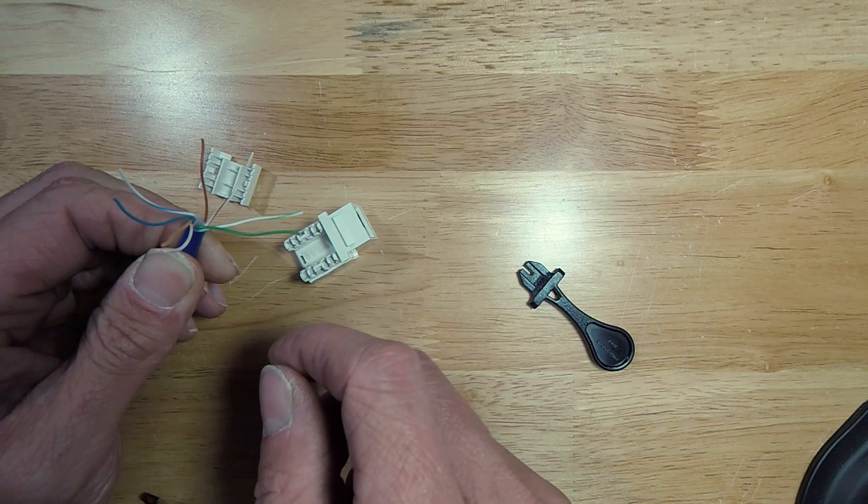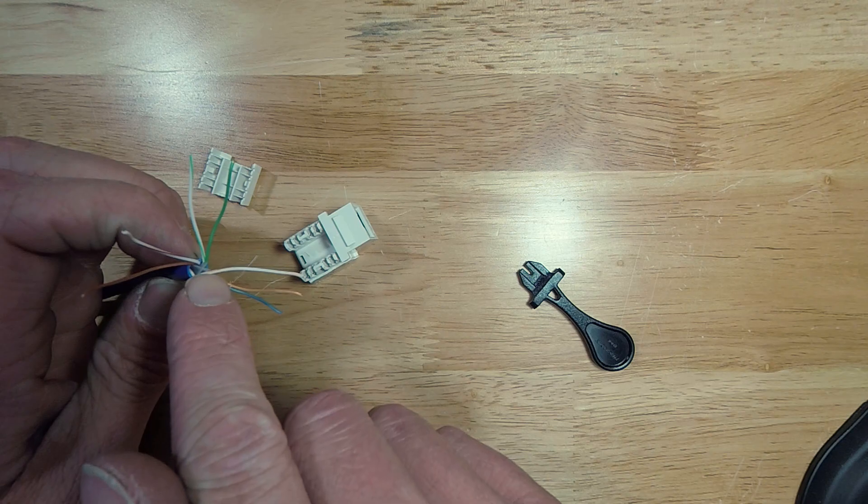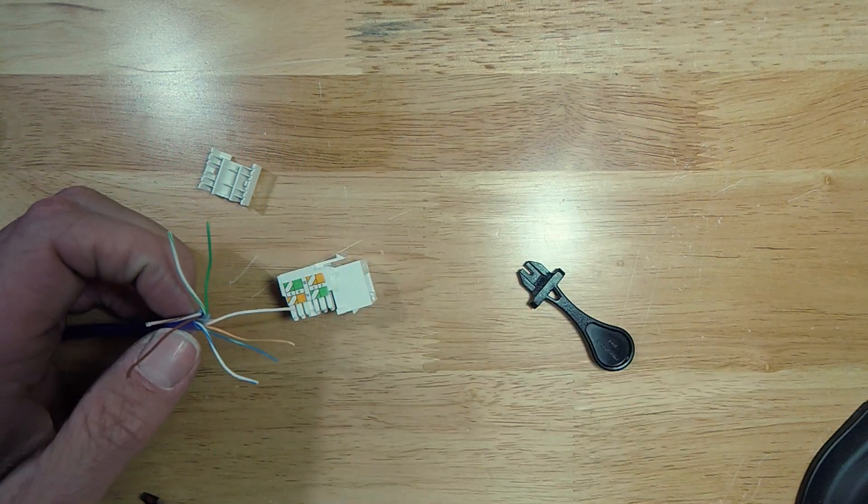So I take my ethernet cable. I've already gotten rid of the sheathing and cut back the plastic core in the middle. Now I'm just going to follow my pattern which is already labeled on my jack.